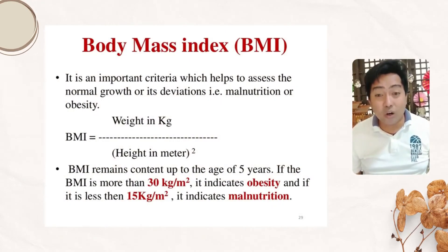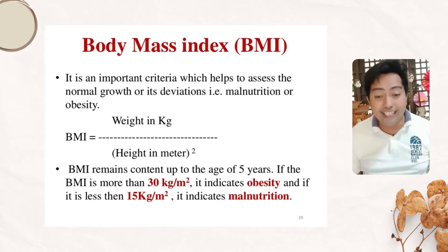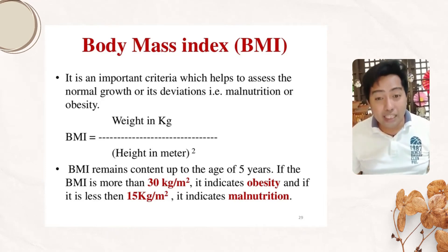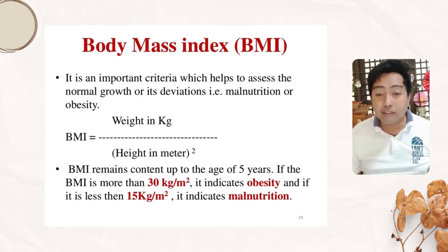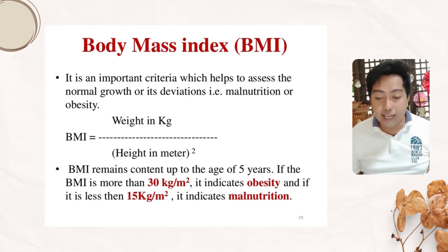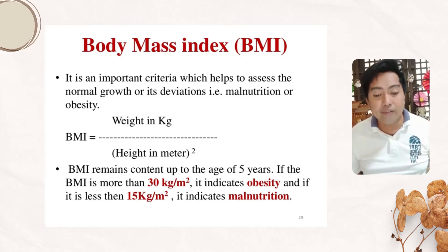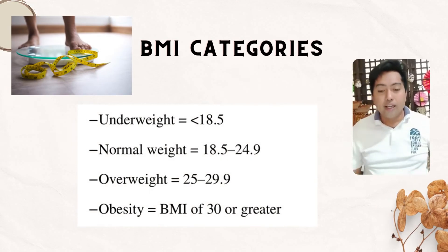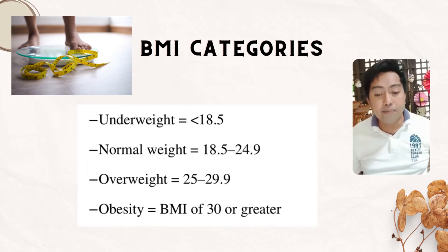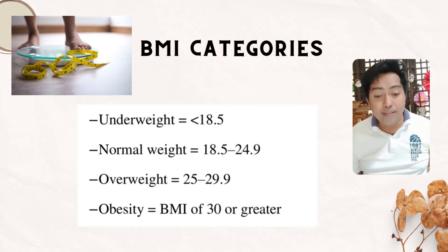Body Mass Index or BMI is an important criterion to assess normal growth, deviations, malnutrition, or obesity. BMI equals weight in kilograms divided by height in meters squared. BMI remains constant up to the age of 5 years. If BMI is more than 30 kg/m², it indicates obesity; if less than 15 kg/m², it indicates malnutrition. Underweight is up to 18.5; normal weight is 18.5 to 24.9; overweight is 25 to 29.9; obesity is BMI 30 or greater.